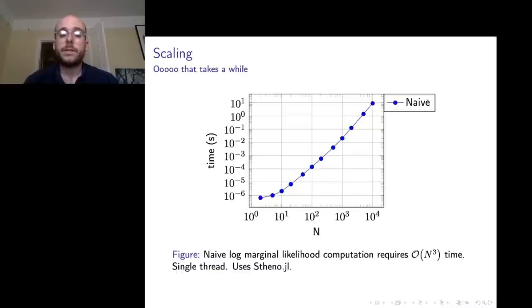In this case, I used Stheno.jl, but the picture would be roughly the same for any other package. Of course, you can scale this up a bit using a larger computer and more threads, but fundamentally the picture is it will scale cubically. So if you wanted to condition on, say, 10 million observations, because you had quite a long time series or a very highly regularly sampled time series, you couldn't do it using the standard approach to inference.